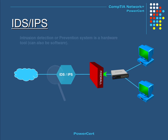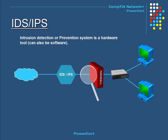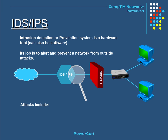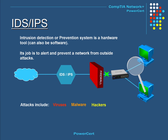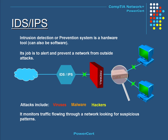An Intrusion Detection or Prevention System is a hardware tool typically placed between the internet and the firewall. Its job is to alert and prevent a network from outside attacks, including viruses, malware, and hackers trying to sabotage an internal network. It monitors traffic flowing through the network looking for suspicious patterns, and if it finds any, it alerts the network administrator of a pending danger.